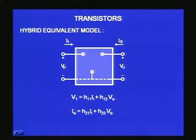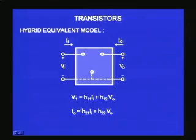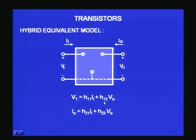You can also relate the other way: Ii and IO written in terms of Vi and VO — then the constants become admittance (one divided by resistance). The most popular way is what I have written at the bottom. Vi equals H11·Ii plus H12·VO, where H11 and H12 are constants of suitable dimensions. From Ohm's law, H11 relates voltage to current — so it must be a resistance. H12 relates voltage V1 to voltage V0 — so it is dimensionless.